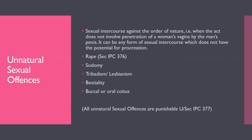Sodomy is anal intercourse between two males, or between a male and female. If performed between two males, it is called homosexual sodomy; between a male and female, it is heterosexual sodomy, also known as buggery. Tribadism, or lesbianism, is female homosexuality in which two women achieve sexual gratification through mutual acts of sexual indulgence.